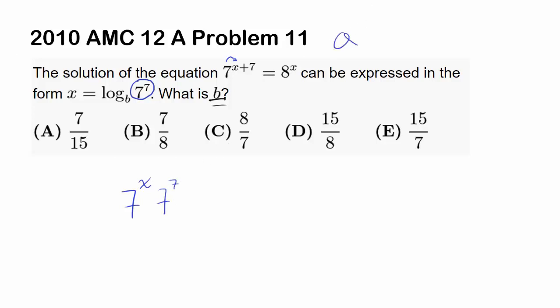Because a to the x power times a to the y power is equal to a to the x plus y power. I'm just splitting this up. You have 7 to the x plus 7 power, so you can split this up as product of 7 to the x times 7 to the 7.